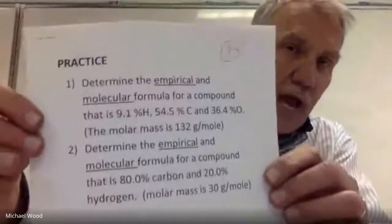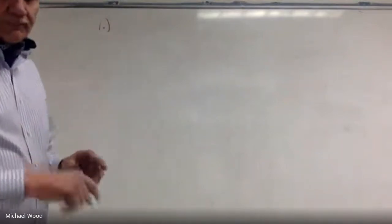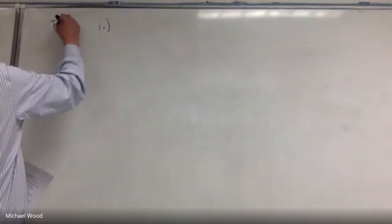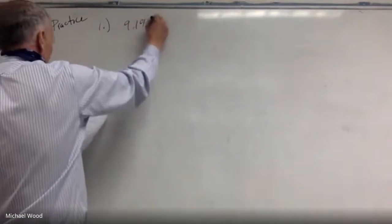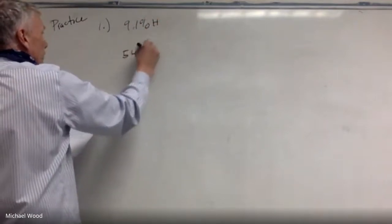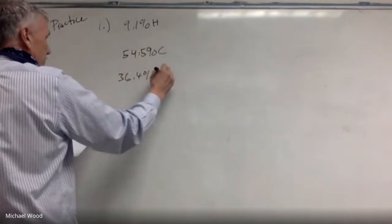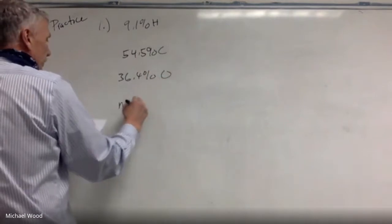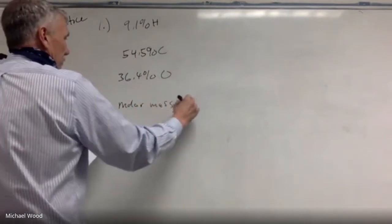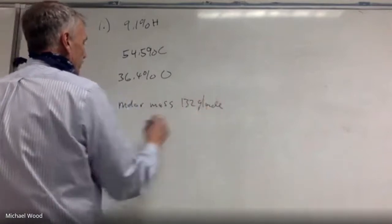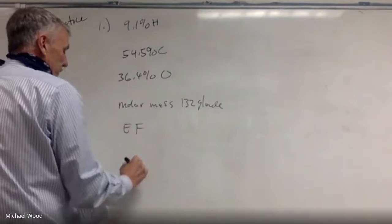Okay, so I'm going to be doing this. I'm going to do the practice. This is 9-4. Okay, so we're going to do both the empirical and the molecular formulas. Okay, so for number one, again, so go through the steps here. So this is the practice. Okay, so I've got 9.1% hydrogen and percents I do the same thing with that I do with the grams. I do the same thing. Okay, and then it says that the molar mass is 132. Okay, so what I'm trying to find is the empirical formula and the molecular formula.